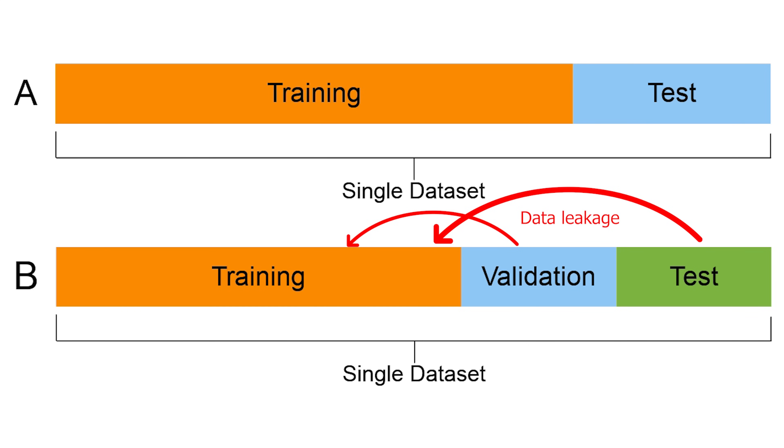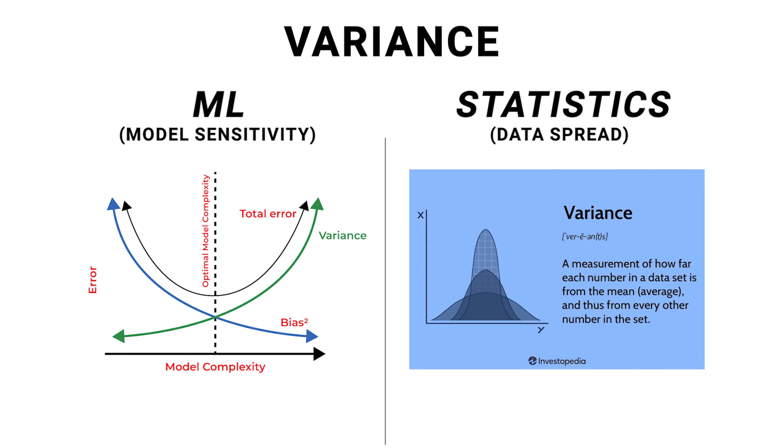Data leakage can come from seemingly innocent things, like using even parts of the test or validation set to inform feature engineering, outlier detection, or imputation. Just a note on the term variance. In this context, it means model sensitivity and is not to be confused with variance as it relates to your data, as in explained variance. While the origin of the term is the same, it has become two separate concepts with the same name.